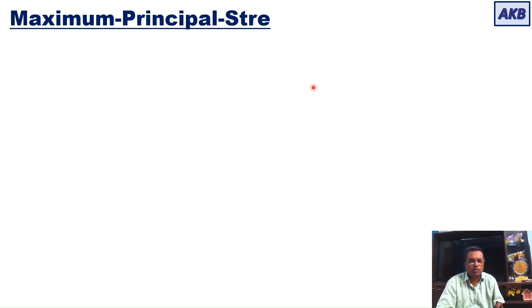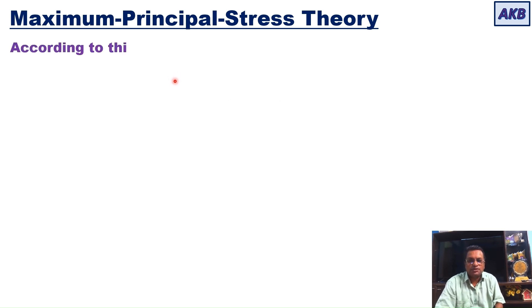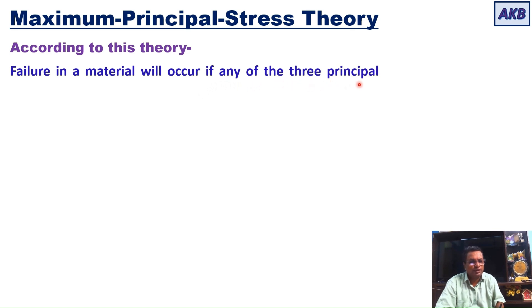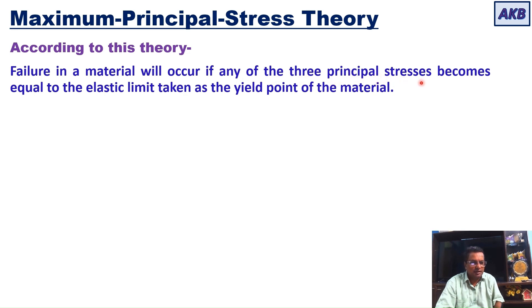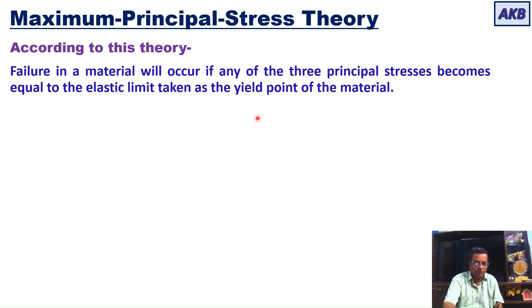So according to maximum principal stress theory, failure in a material will occur if any of the three principal stresses becomes equal to the elastic limit. This elastic limit is taken as the yield point of the material. The yield point is the point on the stress-strain diagram where elastic behavior ends and plastic behavior starts.